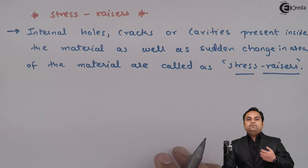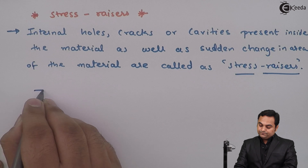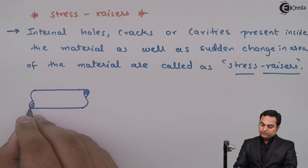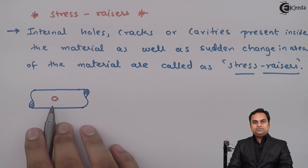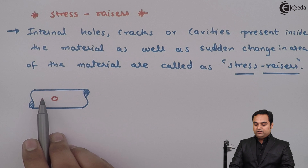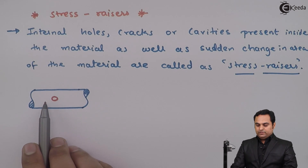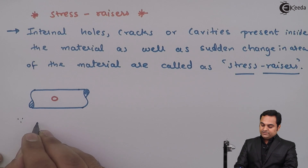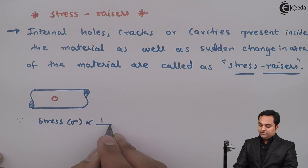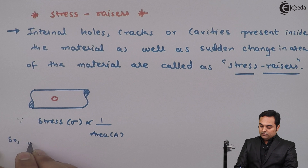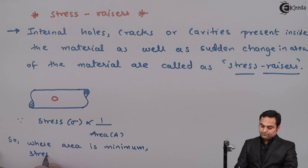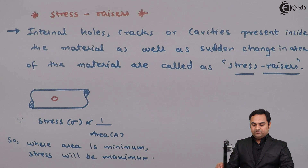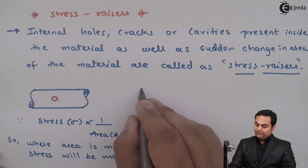For example, if we have an object and inside that object there is a hole, it would be called a stress raiser because stress will be concentrated over this hole. Since the area is less at that point, stress will be maximum — stress is inversely proportional to area, so where area is minimum, stress will be maximum.